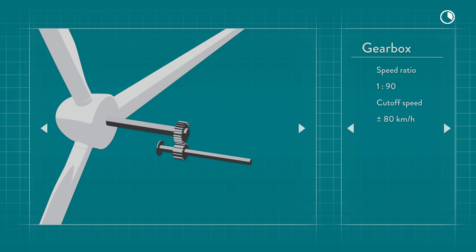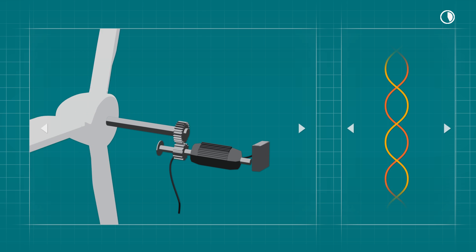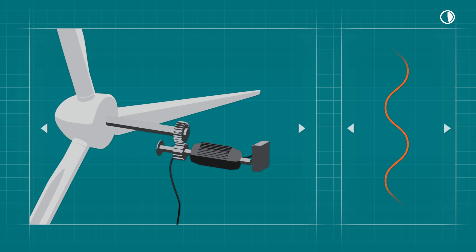This high-speed shaft drives a generator which converts kinetic energy into electricity. A frequency converter synchronizes the generated electricity to the grid.